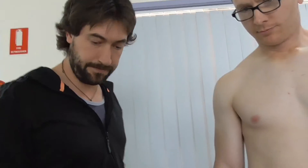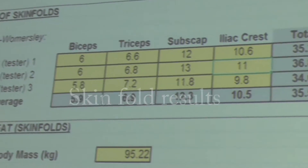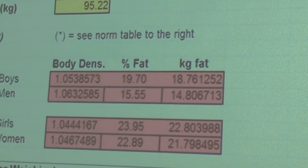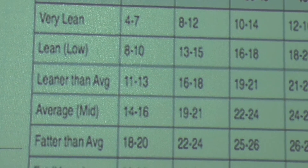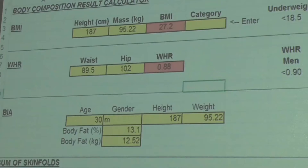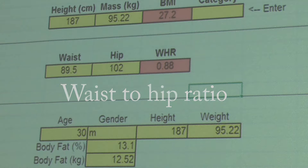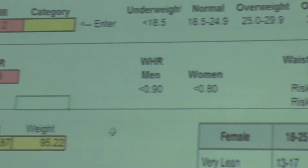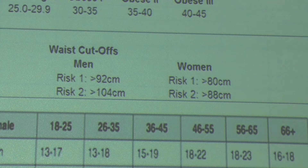The skinfold sum came out at 10.6mm. You plug that into the calculation, and it works out to 15.5% body fat, which puts me at lean to leaner than average for my age bracket for men. We also measured waist and hips to determine the ratio between the two, because if your waist is a lot bigger than your hips you've got more belly fat, putting you at risk for diseases associated with obesity. For men you want to be under a 0.9 ratio — I'm 0.88. If your waist is bigger than 92cm for men that puts you at risk, and at 104cm you're quite at risk.